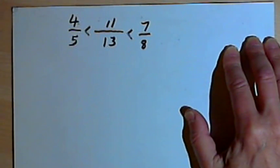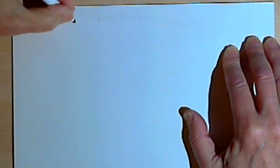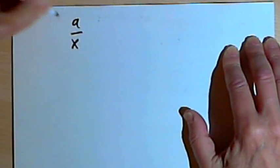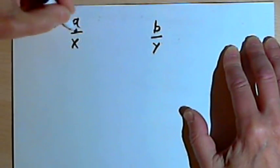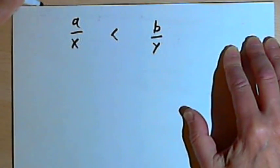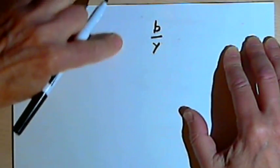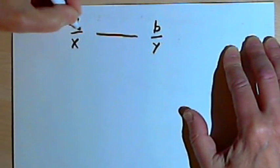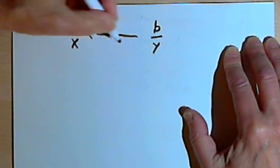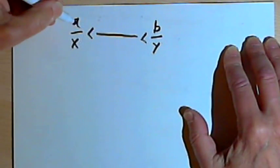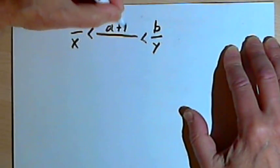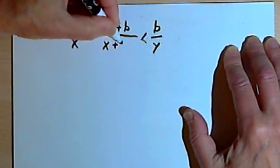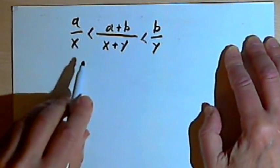What we want to do is prove that this method will always work. To do the proof, instead of using numbers, we use letters. So I have two fractions, a over x and b over y, and let's say that a over x is less than b over y. Using the method, the fraction in the middle is going to be a plus b over x plus y. Now I want to prove that this will always work for any numbers, and I'll do it in two parts.